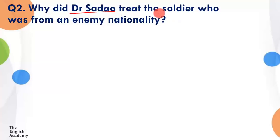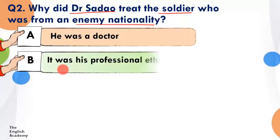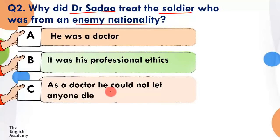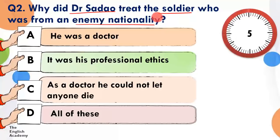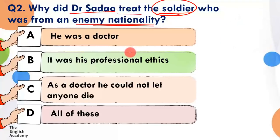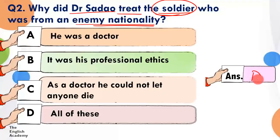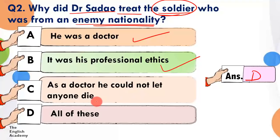Question 2: Why did Dr. Sadao treat the soldier who was from an enemy nationality? Option A: he was a doctor. Option B: it was his professional ethics. Option C: as a doctor he could not let anyone die. Option D: all of these. The time starts now. The answer is all of these.